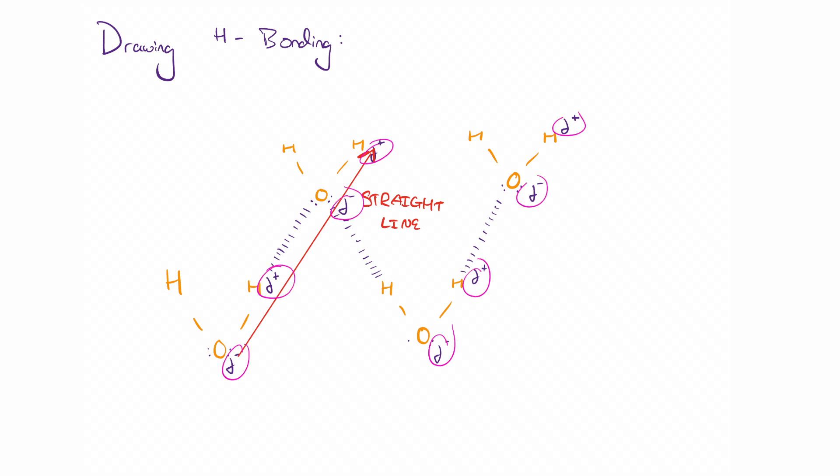You can see that I've labelled the delta positive and delta negative regions, the oxygen being the delta negative, the hydrogen being the delta positive. You can also see these two dots that I've put on the oxygen. These are lone pairs of electrons, essentially non-bonded pairs. Lone pairs and non-bonding pairs of electrons are interchangeable phrases.